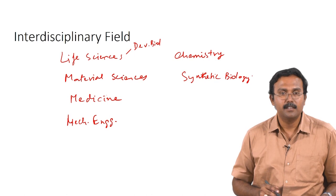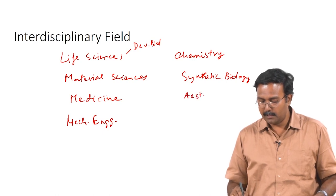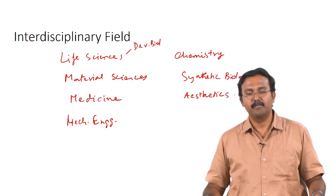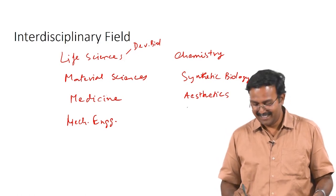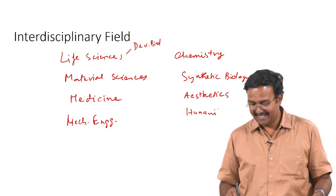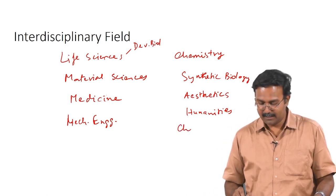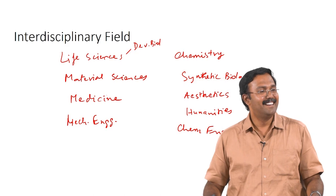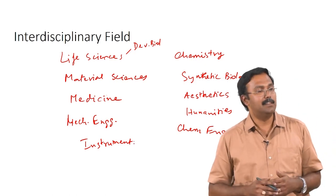Other disciplines suggested include aesthetics and humanities for ethics. Chemical engineering, instrumentation are also relevant. Let us justify each discipline. Life sciences is quite obvious — we are working with living systems. Why specifically developmental biology? If you want to regrow cells and make them into tissues using stem cells, developmental biology tells you how tissues are actually developing, so you can hopefully recreate it.